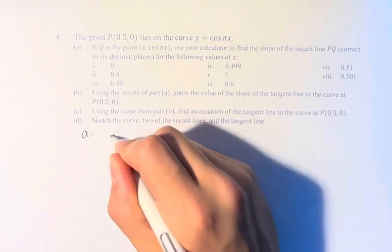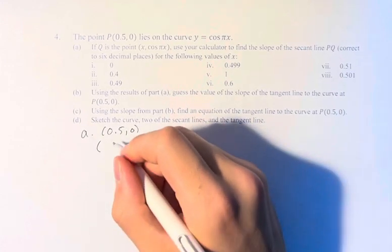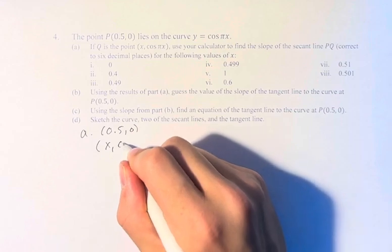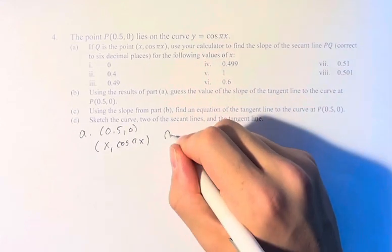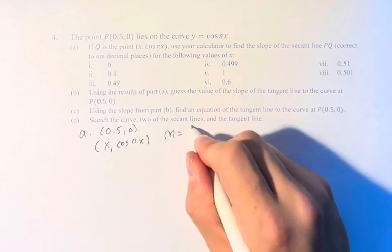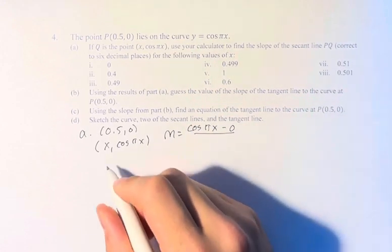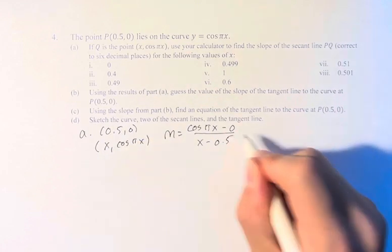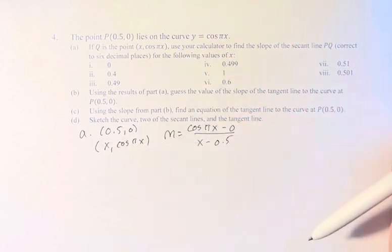So if we have the point (0.5, 0) and (x, cosine of pi x), the slope of the line between these two points is the change in y, which can be cosine of pi x minus 0, over the change in x, which is x minus 0.5. Whatever this turns out to be is going to be the slope of the line, which is a secant line to this curve between these two points.